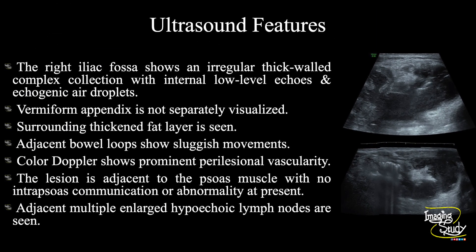In summary, the right iliac fossa shows an irregular thick-walled complex collection with internal low-level echoes and echogenic air droplets. The vermiform appendix is not separately visualized. A surrounding thickened fat layer is seen. The lesion is adjacent to the psoas muscle with no intralesional communication or abnormality at present. Adjacent multiple enlarged hypoechoic lymph nodes are seen. These features conclude it as a case of appendicular abscess.